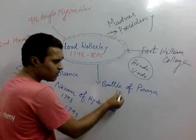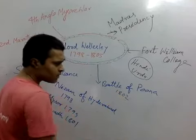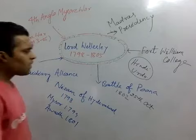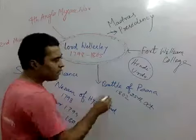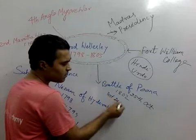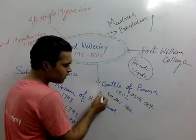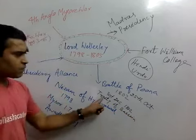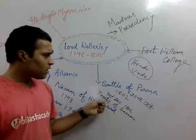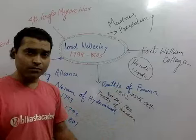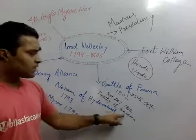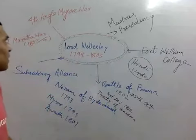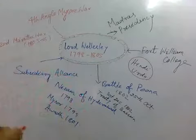Now we will talk about a few wars and battles. The Battle of Poona was fought in 1802 — specifically on 25th October 1802. After the Battle of Poona, one treaty was signed on 31st December 1802, which is known as the Treaty of Bassein. A question may be asked: during which battle was the Treaty of Bassein signed? The answer is the Battle of Poona, or which Governor General it was signed under.